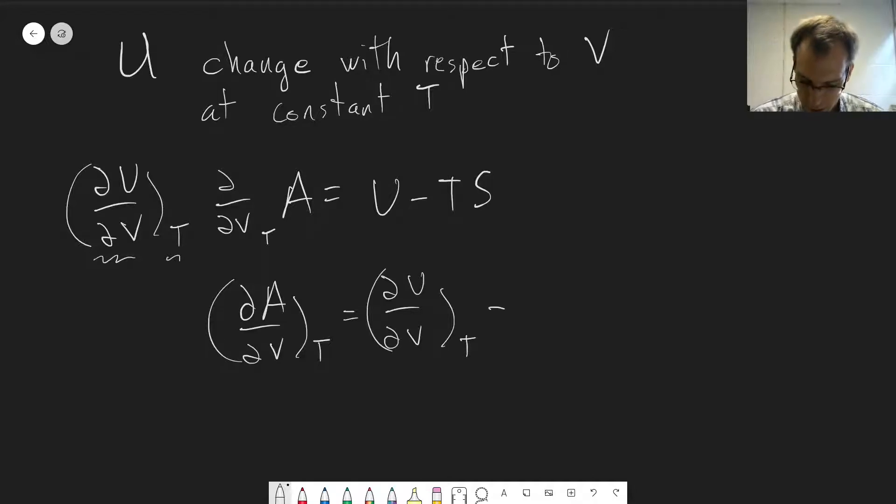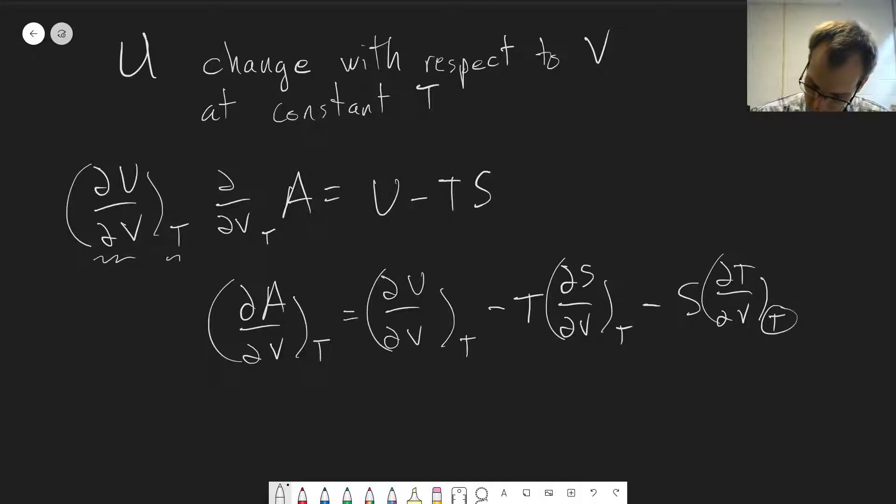and then we need to use the product rule here. We're going to have T times dS/dV at constant T minus S times dT/dV at constant T. But because this is at constant temperature, by definition, dT is equal to zero, so this last term goes away.